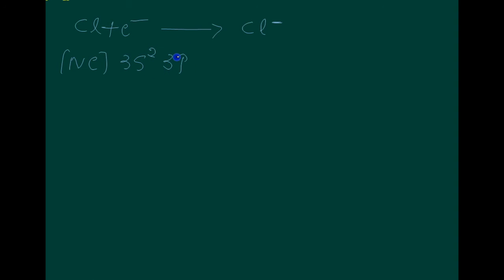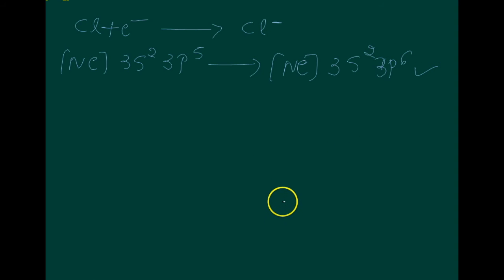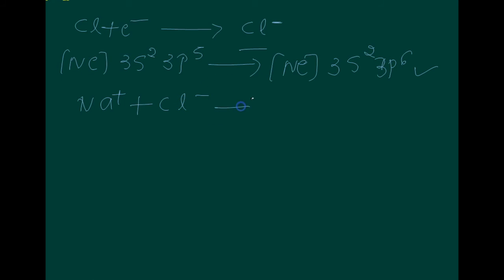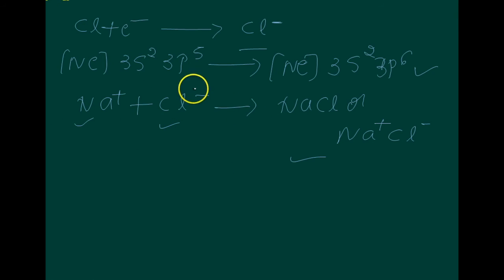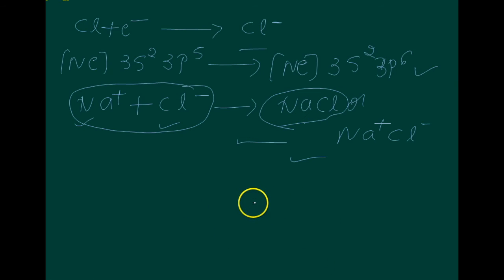Chlorine has the electronic configuration 3s² 3p⁵. It gains one electron, so the configuration becomes 3s² 3p⁶. Then Na⁺ and Cl⁻ combine to give sodium chloride, NaCl. The negative and positive ions are stabilized by electrostatic attraction, forming NaCl.